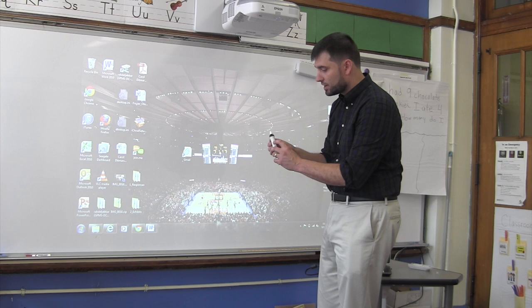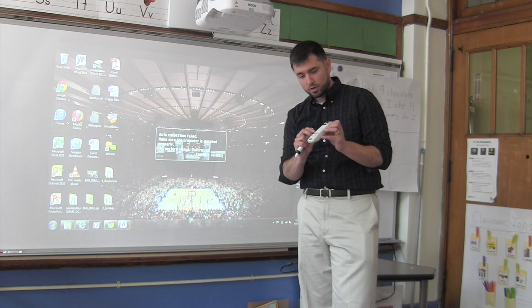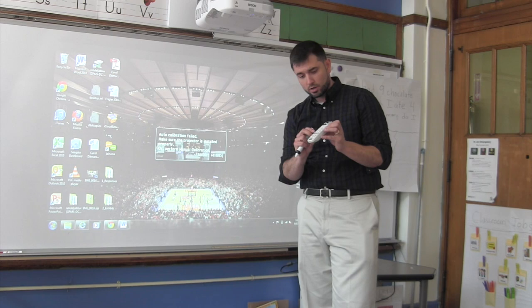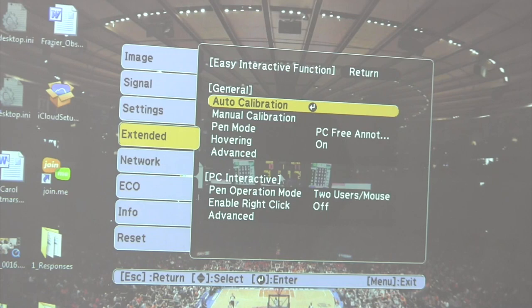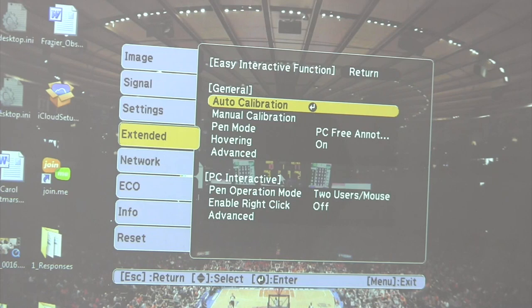Take your remote to calibrate the pen with the board and press the user button. Select no so that you can manually calibrate the projector. Move from auto calibration to manual calibration and press the center button.